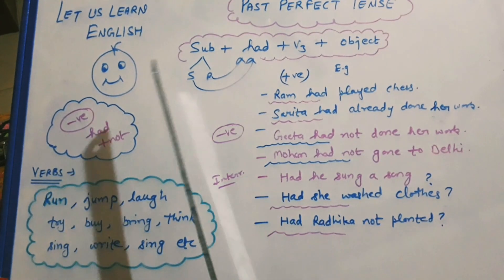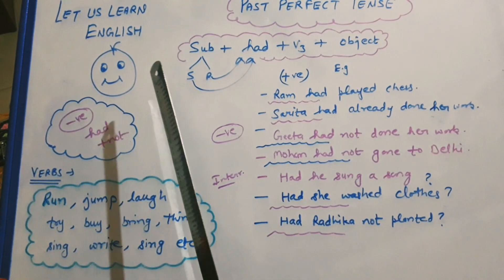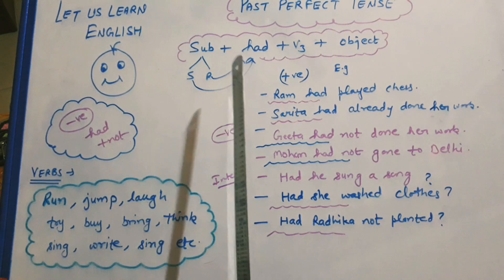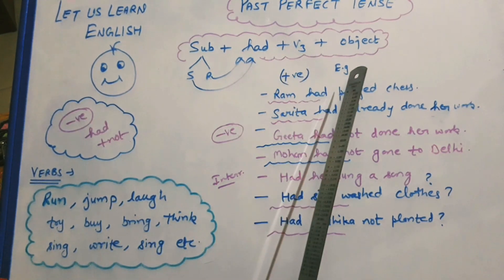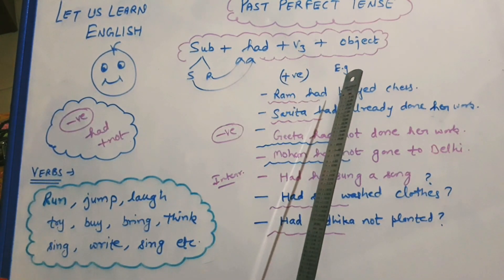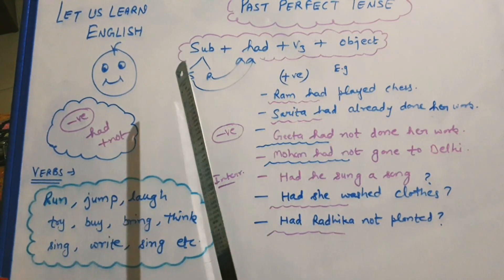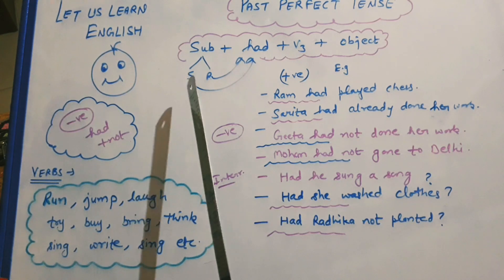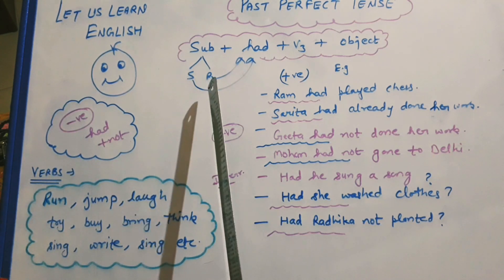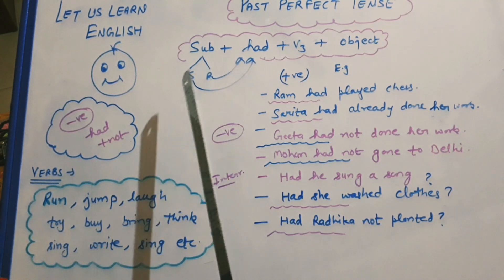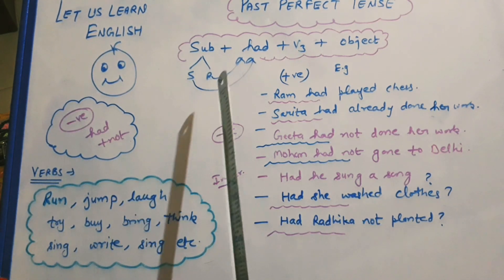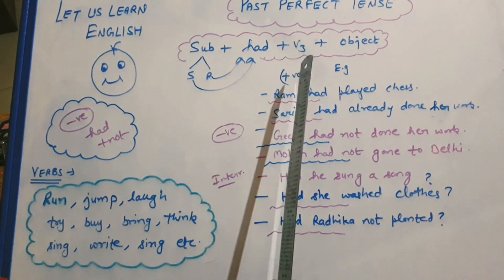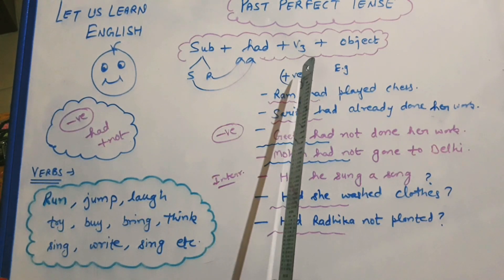What is past perfect tense? Past perfect tense is: subject plus had plus V3 plus object. We need not worry whether the subject is singular or plural. Whether it is singular or plural, we use had and V3.